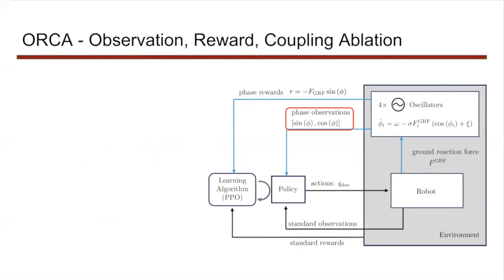Phase observations from the oscillators are provided to the policy input along with other standard state information, and desired joint states are output to the robot. The policy is rewarded if the robot's legs experience ground reaction forces during stance phase and penalized if GRFs are experienced during swing phase. The robot interacts with the environment, and GRF feedback affects the oscillator dynamics through the coupling term.